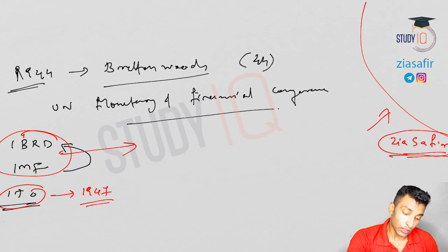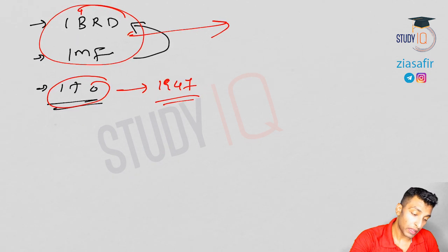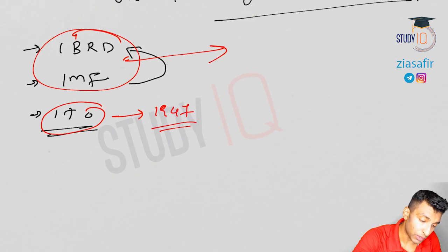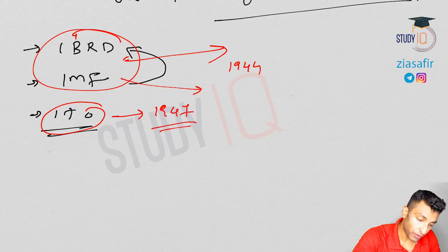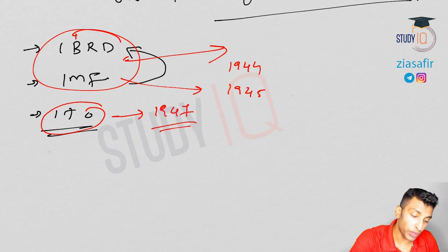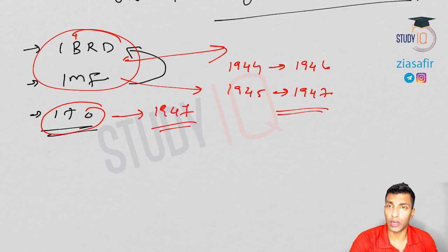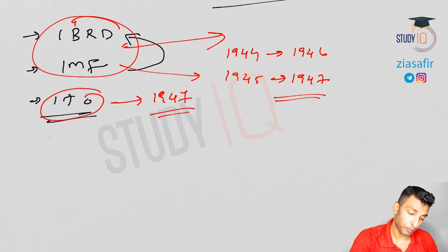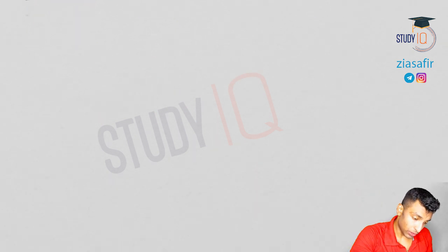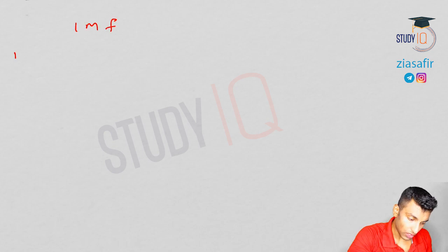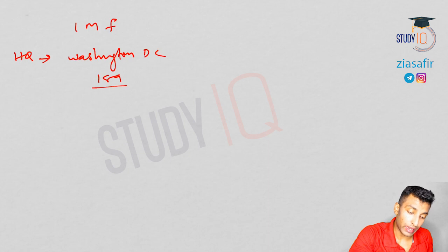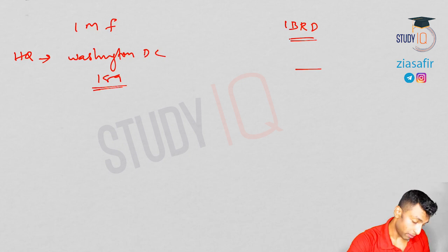IBRD was established in 1944 and IMF in 1945. IBRD came into operational in 1946 and IMF in 1947. As I mentioned, membership of IMF is a prerequisite for membership of IBRD, with some exceptions. The headquarters of IMF is in Washington DC, and there are 189 members — the same number as IBRD.